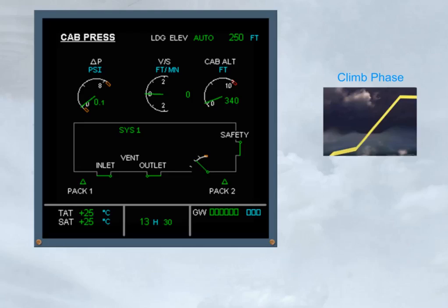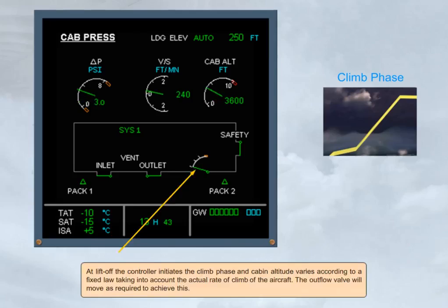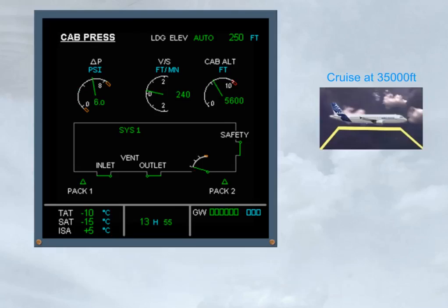At lift-off, the controller initiates the climb phase, and cabin altitude varies according to a fixed law, taking into account the actual rate of climb of the aircraft. The outflow valve will move as required to achieve this. Once established in cruise, the cabin altitude and differential pressure will remain steady. The outflow valve will move as required to maintain the cabin altitude.